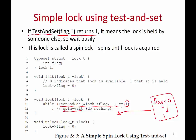To release the lock, you simply set the flag to 0. After one thread has acquired the lock, all other threads that try to lock will be spinning in the while loop — they keep checking and seeing the old value is 1, so they haven't acquired the lock. This is called a spin lock: all other threads keep spinning until they acquire the lock. This is a very simple lock using test-and-set.